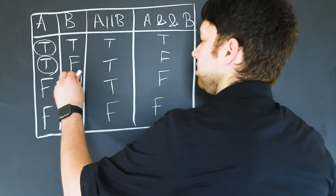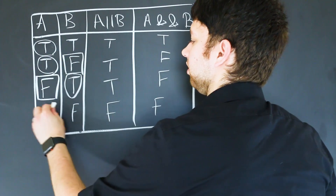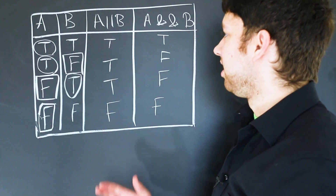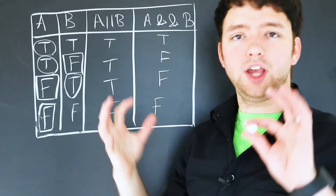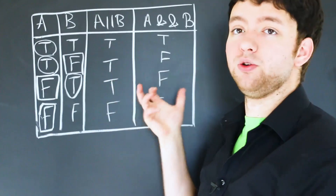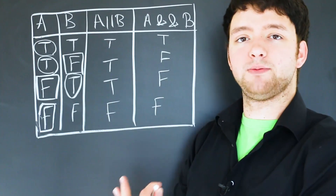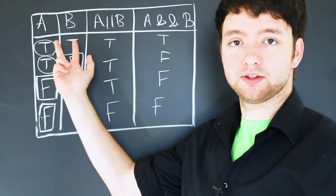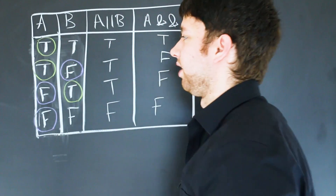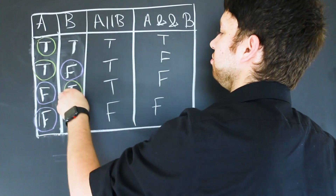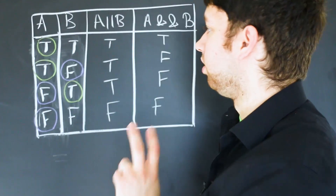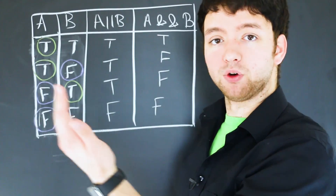The opposite happens with AND: any time there is a false input, we know the value is going to be false. The only time AND produces true is when both inputs are true. You think about the bare minimum requirements to know the end result, and when reading left to right, sometimes you can know the end result before having to look at both inputs. The greens show trues that automatically make OR true, and the purples show falses that automatically make AND false — but only the ones on the left are useful.